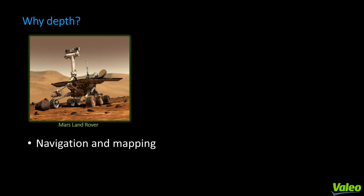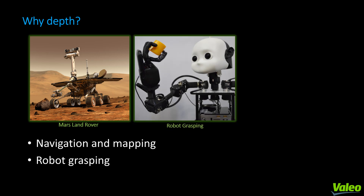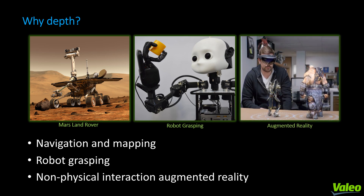A brief overview as to why we are interested in depth. Depth is crucial when it comes to understanding the world around us, such as navigation and mapping. If you are a robot, you would like to know where you are, where you want to go, and how far away things are. If you are going to grasp things and interact with the physical world around you, depth is also crucial. Finally, for non-physical interaction such as augmented reality — for example, placing an object on a table — you want to know how big the table is and how far away it is.